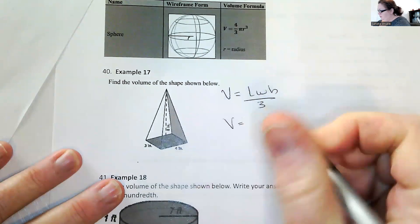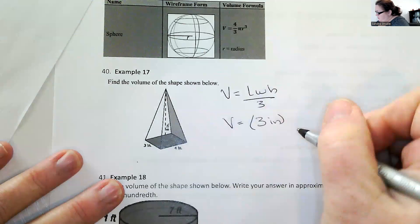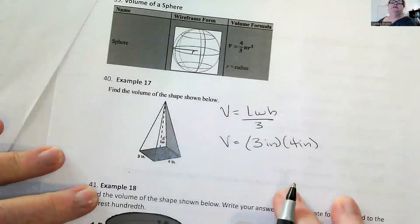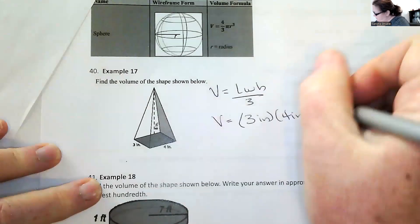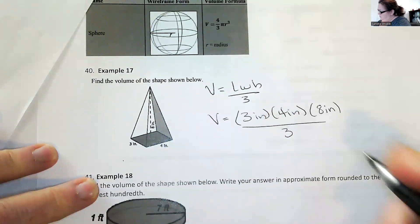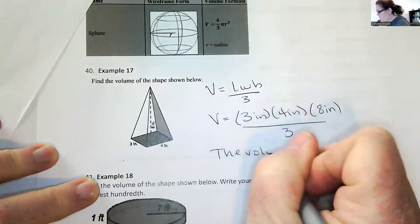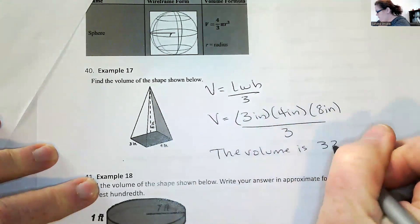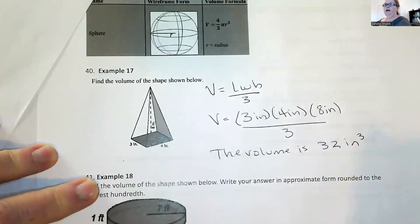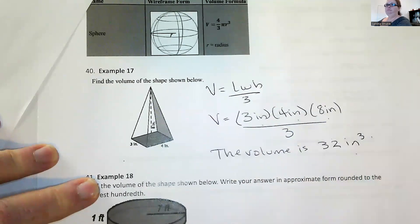So the volume, the length is three inches. The width is four inches. And the height is eight inches. And all of that divided by three. So that's going to be 32. So the volume is 32 inches cubed. I know it's inches cubed because inch times inch times inch is inches cubed.